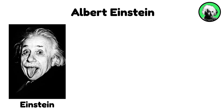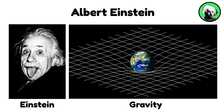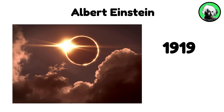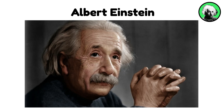In 1915, Einstein expanded his theory to include gravity, formulating the general theory of relativity. This theory posits that massive objects cause a distortion in spacetime, which is experienced as gravity. The theory was confirmed during a solar eclipse in 1919, when observations showed light bending around the sun, aligning with Einstein's predictions. Einstein's work has profoundly influenced modern physics, and his theories continue to underpin much of contemporary scientific thought.